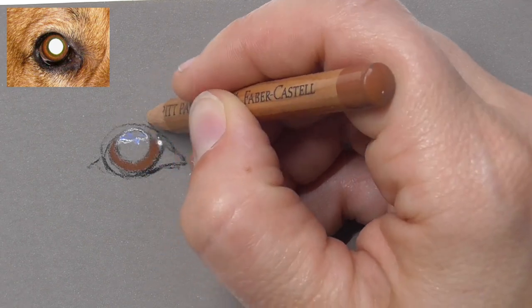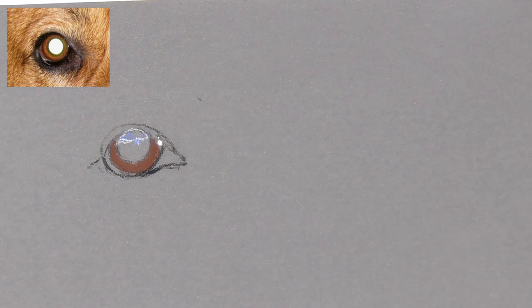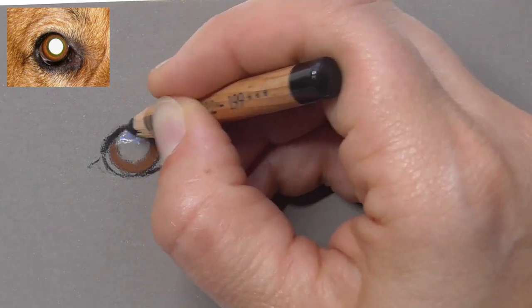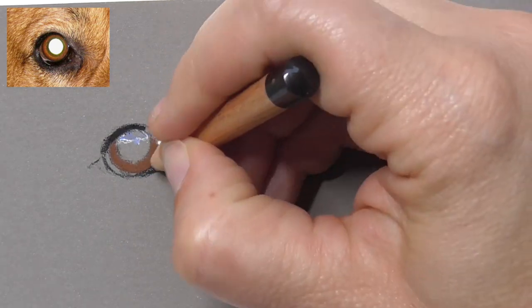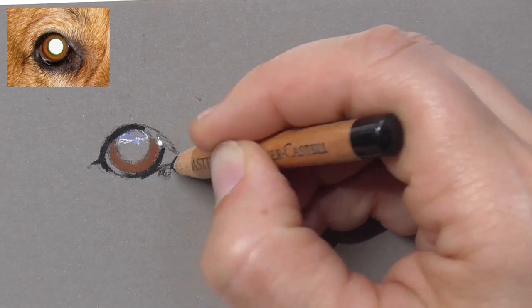And then let's color the iris with a brown. You see here on the reference photo that the brown is going in a circle, but I will darken in this case the upper part.